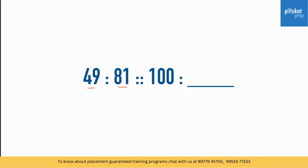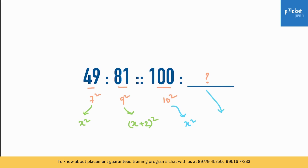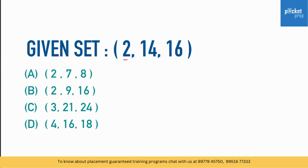We have 49, 81, 100, and unknown. Looking at the numbers, we can clearly see these are squares: 7², 9², 10². If I take this as x², the next will be (x+2)². So if x is 10, then (10+2)² = 12² = 144. Therefore the answer is 144.